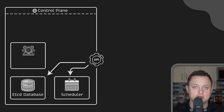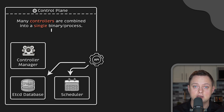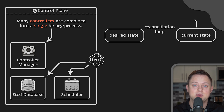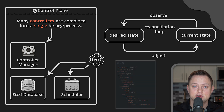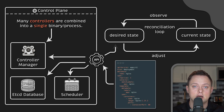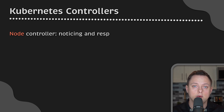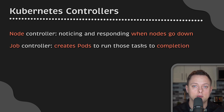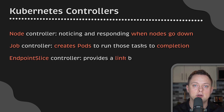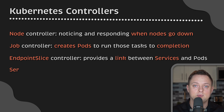Next is the kube-controller manager. While there are many different controllers in Kubernetes, to reduce complexity they are all combined into a single binary and run in a single process. Kubernetes has a reconciliation loop that constantly watches both the current and desired states. For example, if you apply a new deployment object, you change the desired state, and the corresponding controllers will then try to perform necessary actions such as creating and running a certain number of pods. We have a node controller, responsible for noticing and responding when a node goes down; a job controller, which watches for job objects and creates pods to run those tasks to completion; and an endpoint slice controller, which populates endpoint slice objects to provide a link between services and pods.